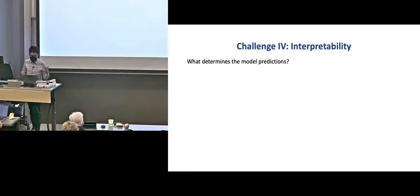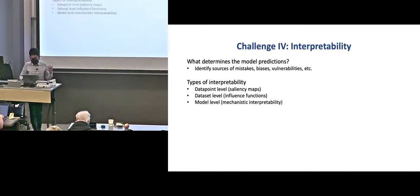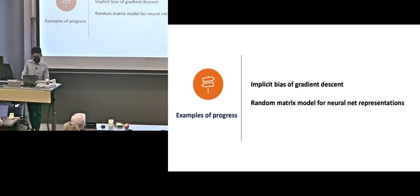Okay, and the fourth challenge I also want to briefly mention is interpretability, which is very closely related to all of the things I talk about. Because generally, neural nets are usually considered black box, and it's very difficult to track down what exactly determines the model predictions. But that's also very important for practice, because we'd like to identify sources of mistakes, biases, vulnerabilities, etc., especially in safety-related and high-stakes applications. And so there are different types of interpretability work, either at the data point level or data set level and the model level. I won't go into the details, but just want to mention this, because I think it's very important, and it's closely related to what theory cares about.